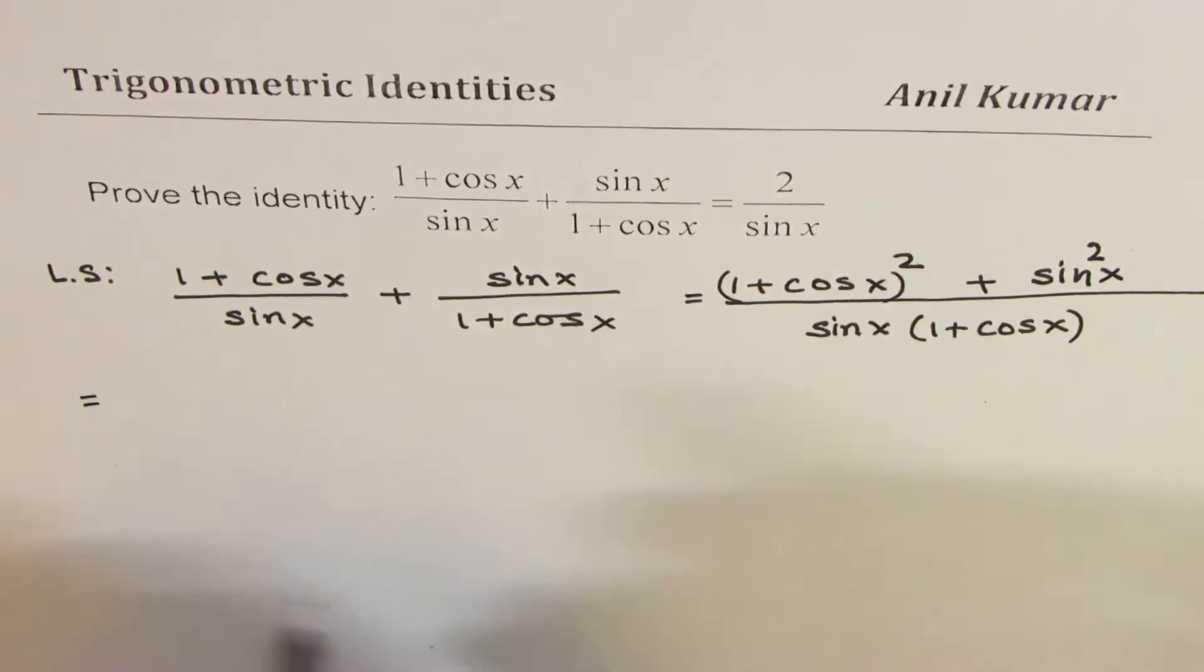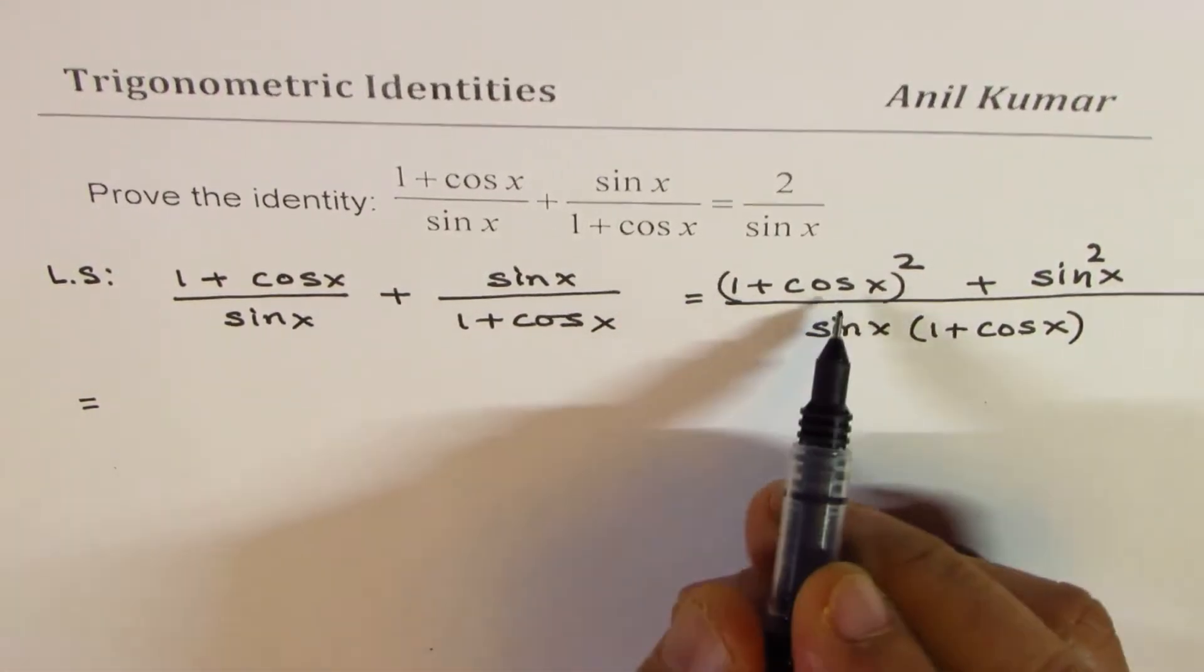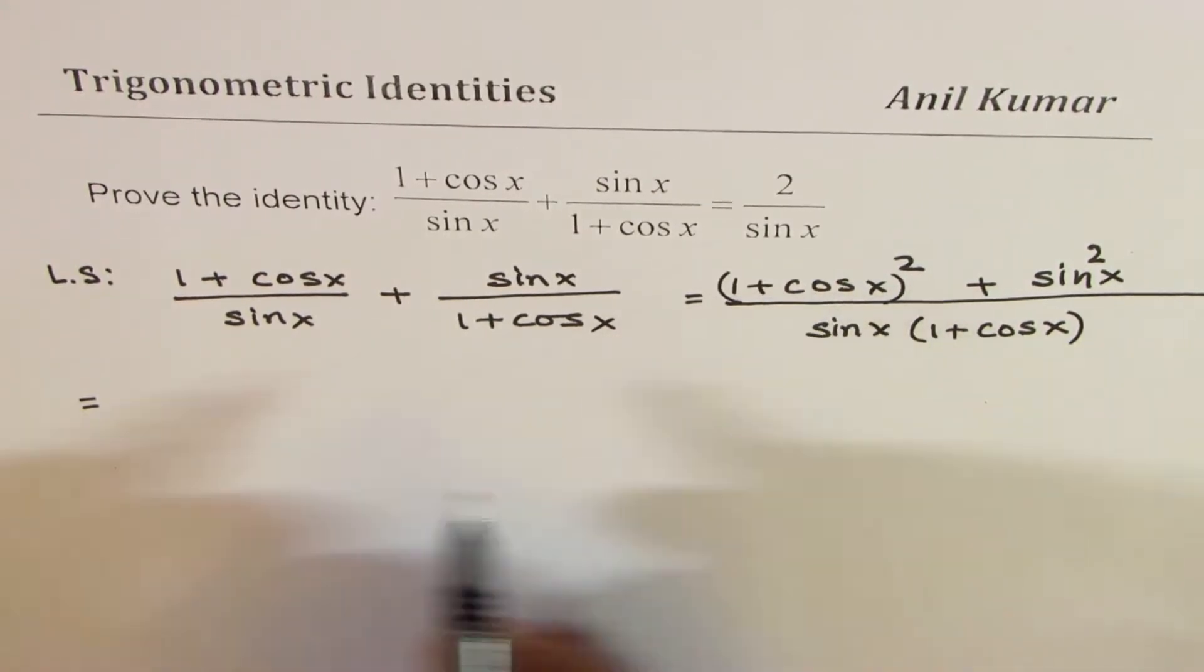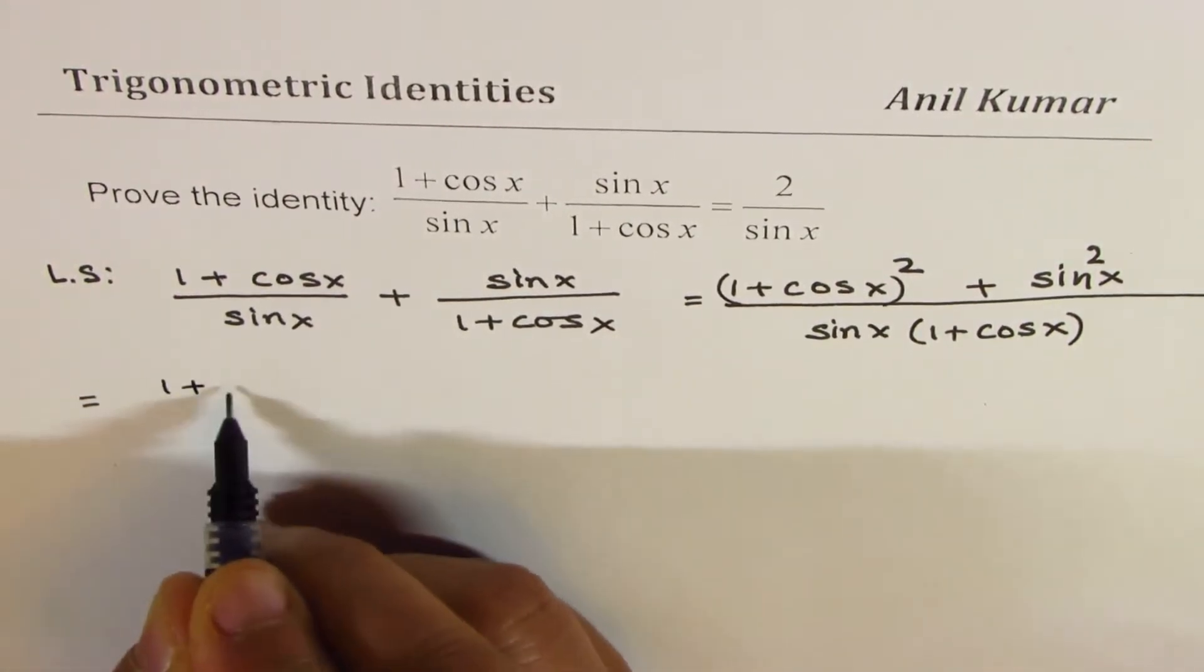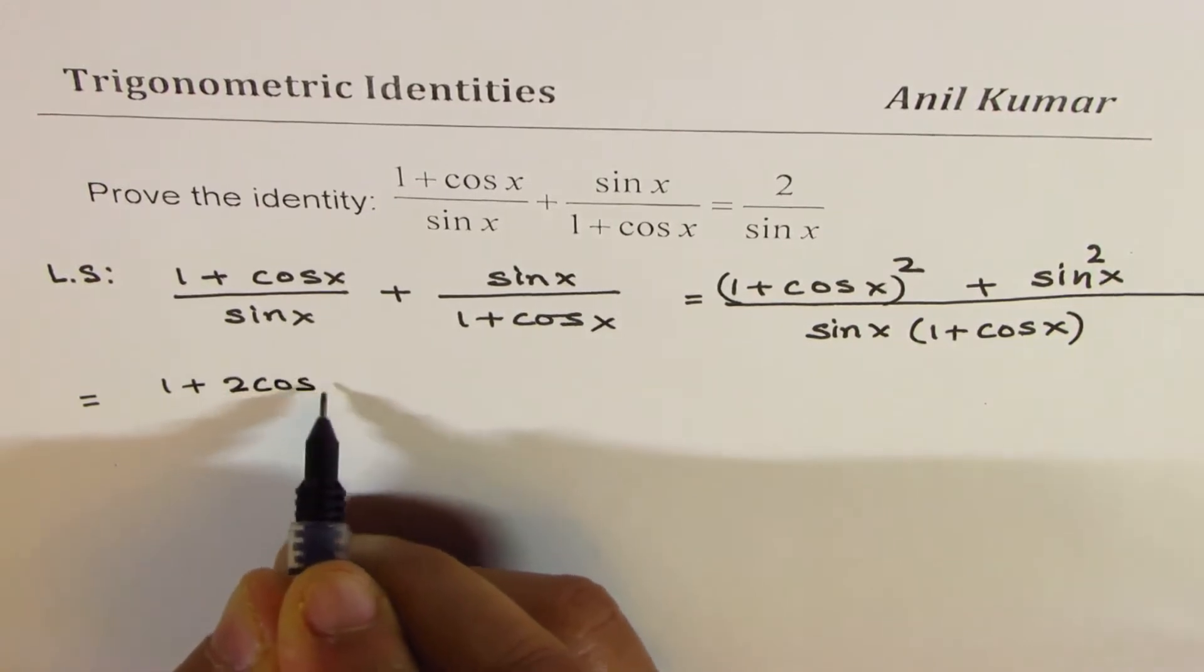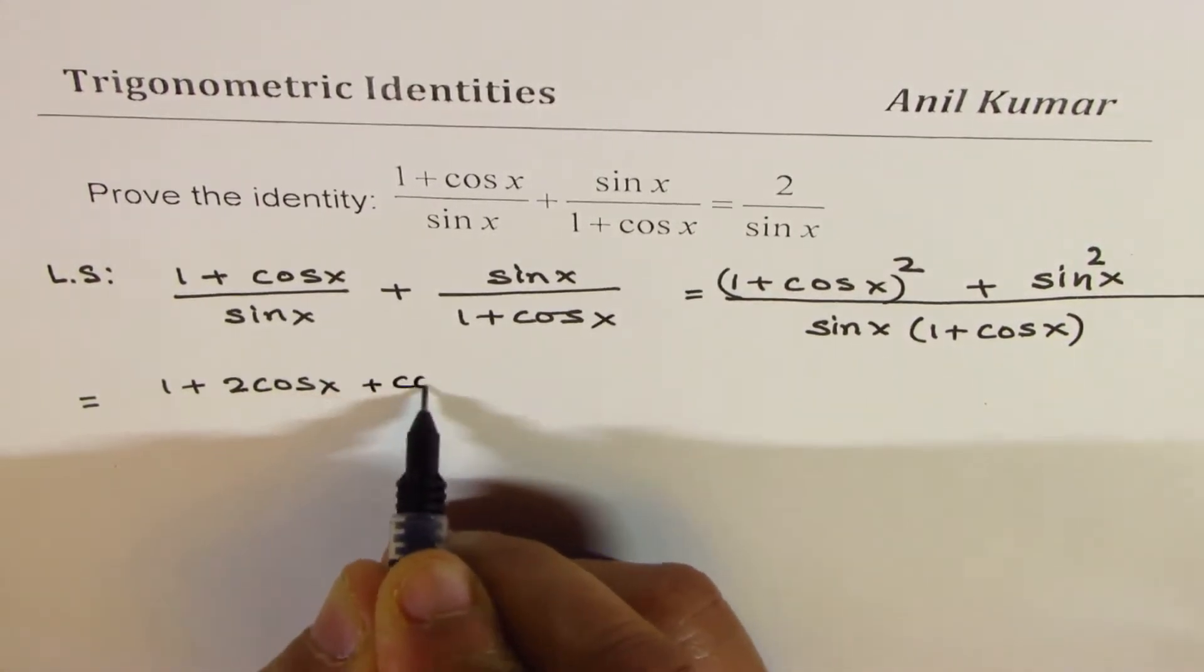Now, let us expand this. a plus b whole square is a square plus 2ab plus b square. So, we get 1 plus 2 cos x plus cos square x.